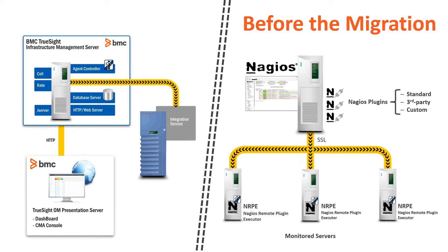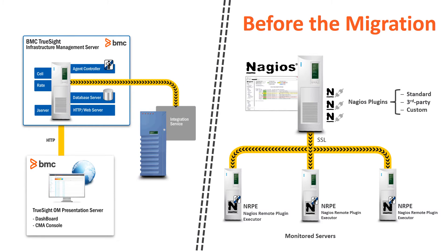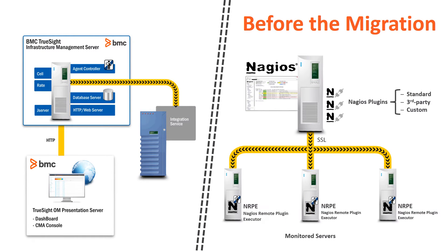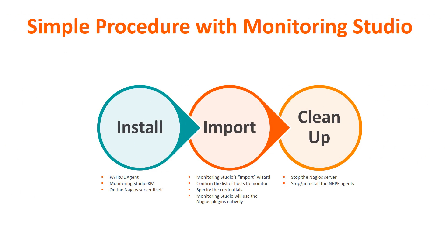This is how your environment should look before migrating — BMC on one side and Nagios on the other. The migration procedure is very simple and requires three steps only.